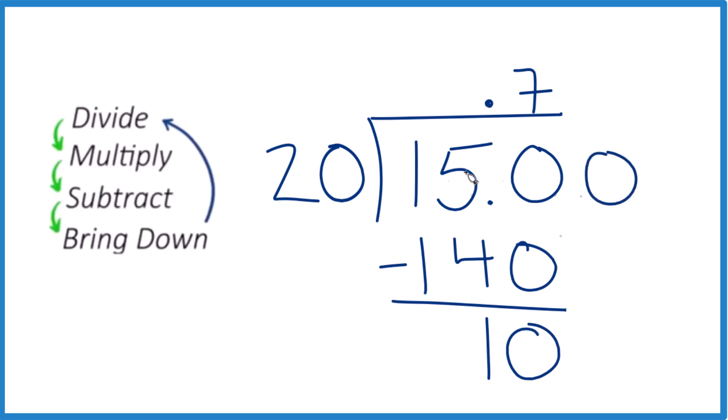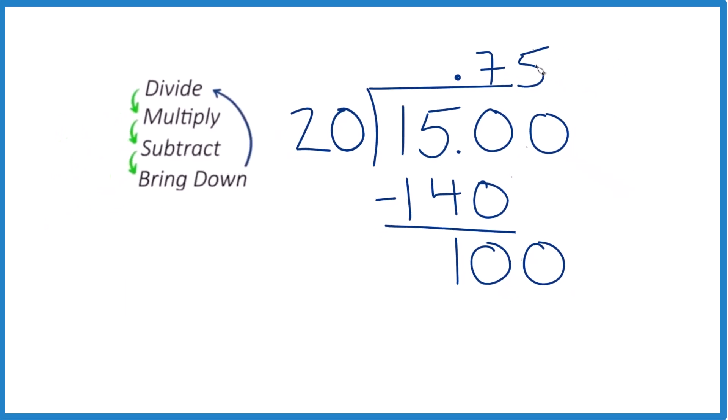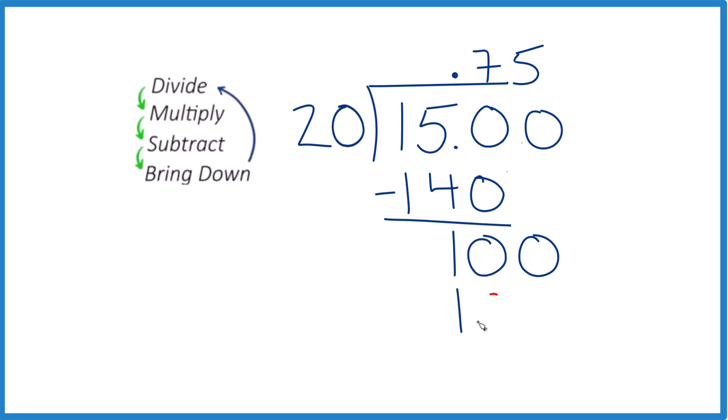So we can put another 0 out here because it's still just 15. We haven't changed the value. We can bring this down here as long as we move over a decimal place here. And now 20 goes into 100 five times. So 5 times 20 is 100. Subtract, and we'll get 0, and we're done.